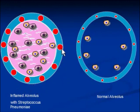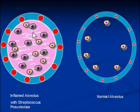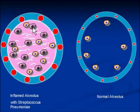In the infected alveolus, the blood vessels are dilated and the alveolar space is filled with exudates, which is composed of fibrin, lysed blood, bacteria, dead cells, macrophages, and neutrophils.